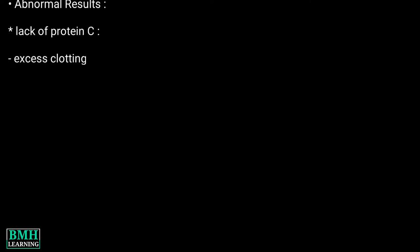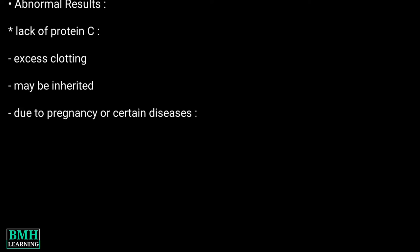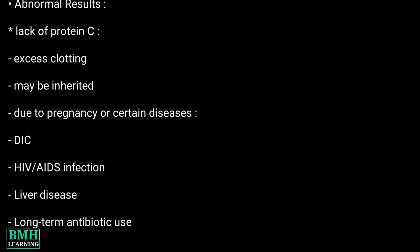What do abnormal results mean? A lack of Protein C can lead to excess clotting. These clots tend to form in veins, not arteries. A Protein C deficiency may be inherited. It can also develop due to pregnancy or certain diseases including disseminated intravascular coagulation, HIV infection, liver disease, long term antibiotic use, and warfarin use.